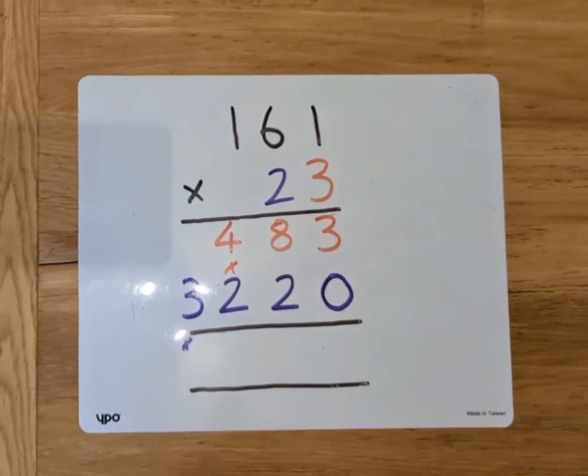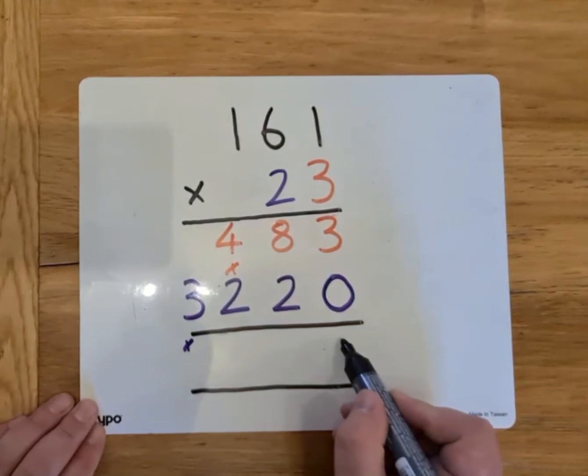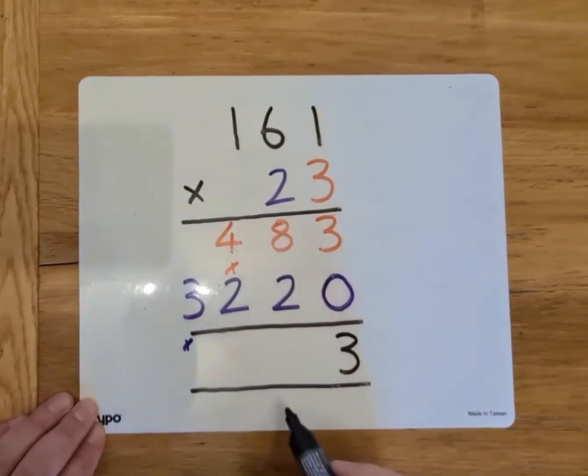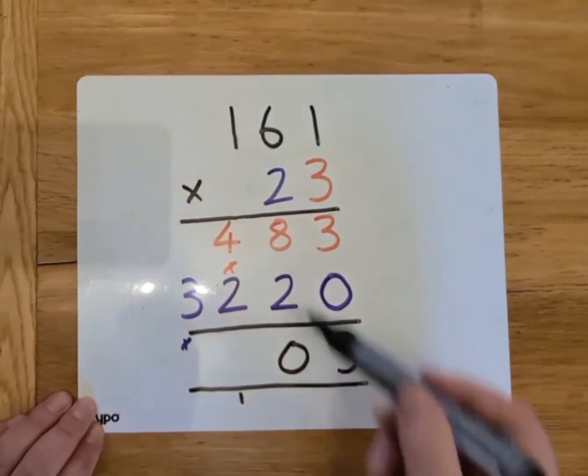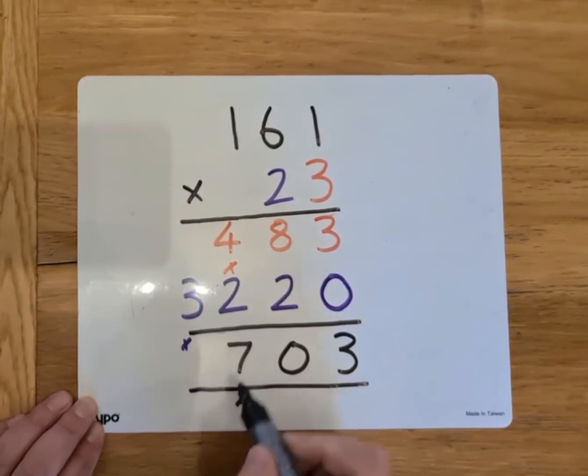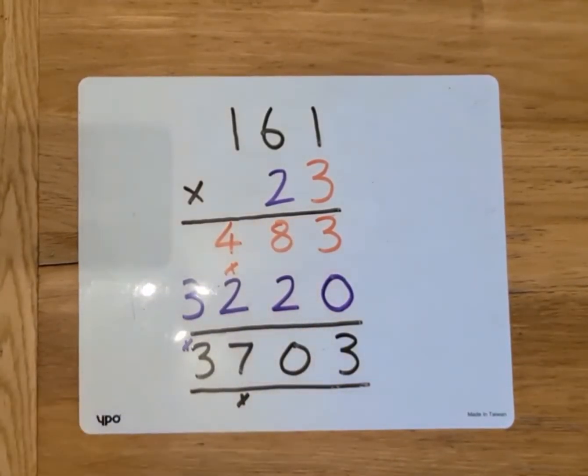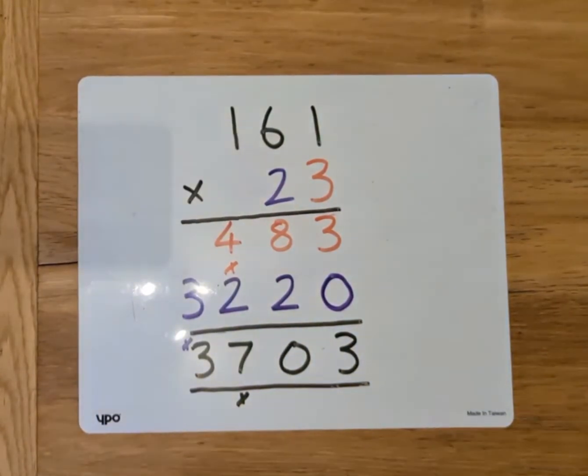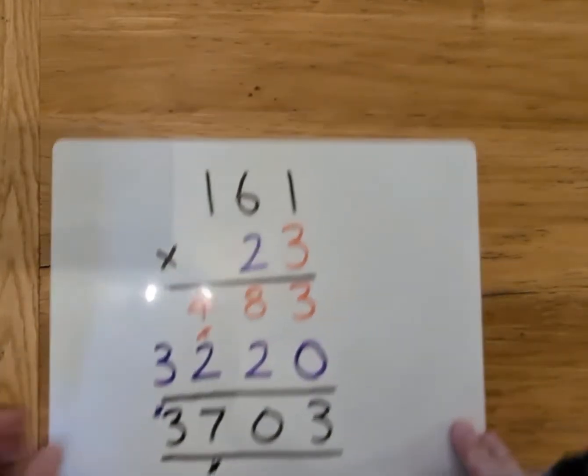What I do next is add those numbers up to get my final answer. So 3 add 0 is 3, 8 add 2 is 10, so I'll put the 1 there and the 0 there. 4 add 2 is 6, add the extra 1 is 7, and nothing add the 3 is 3. I've got 3,703. That's how I'll work it out. I could now check that using a calculator. What I'll do next then is move on to the next question.